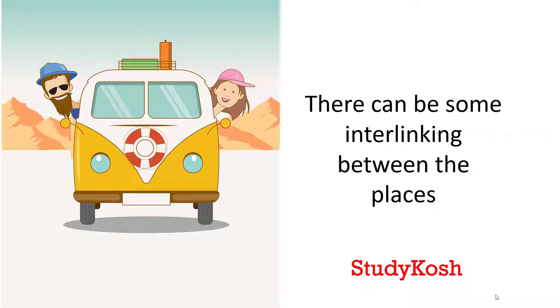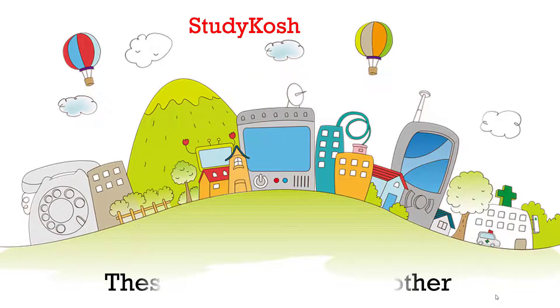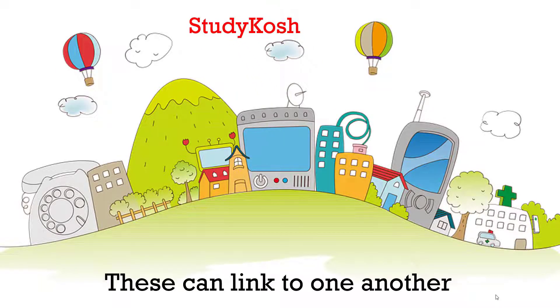There must be interlinking between the places. Interlinking is important because we are assigning information to our memory palace. Whatever objects are there in the memory palace, we are assigning information to them. Therefore, the places you select must be interlinking to one another, or these places can have one or the other kind of link with one another.